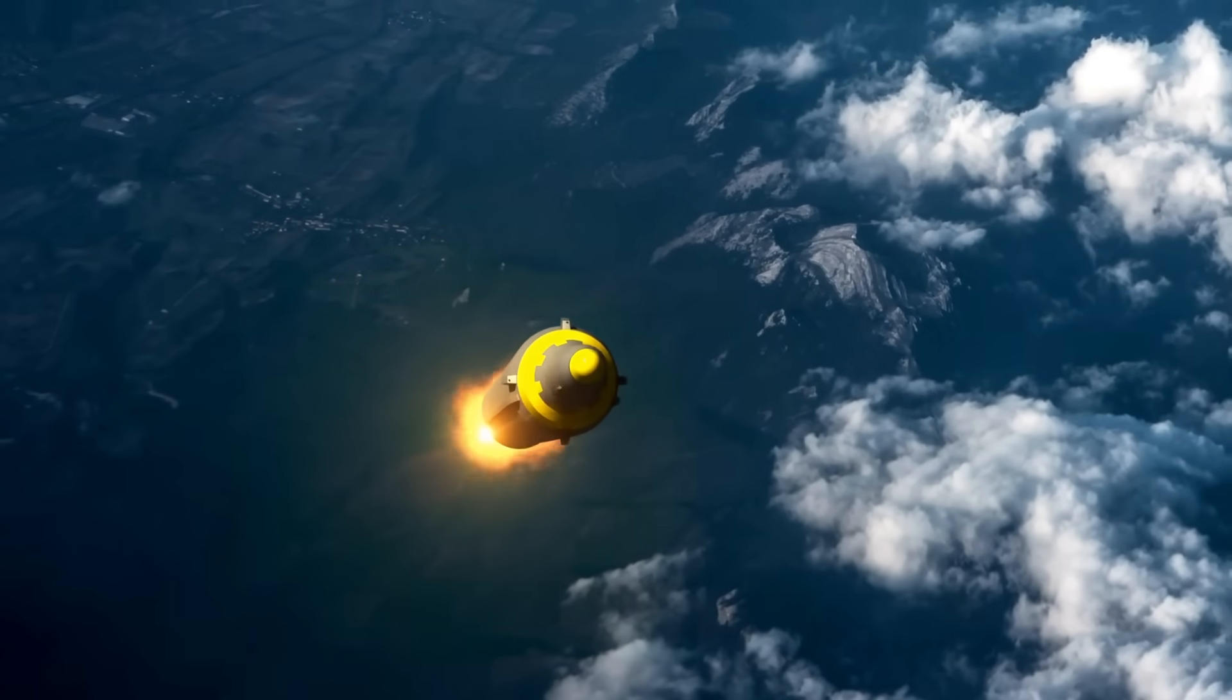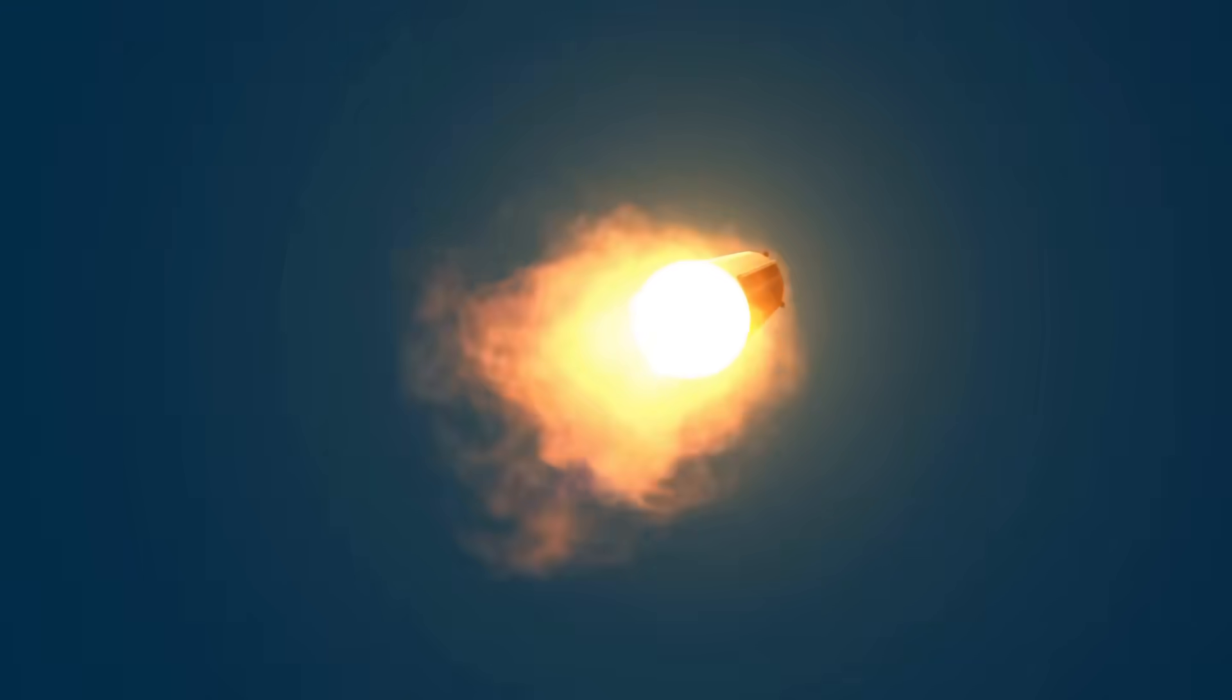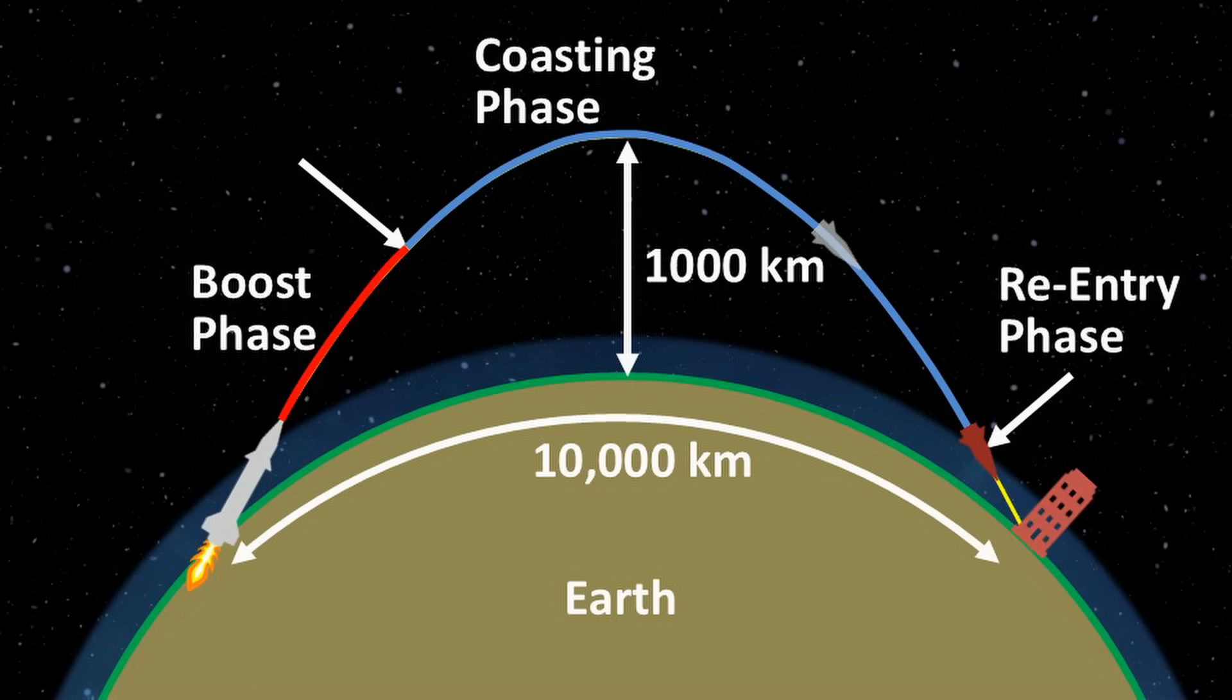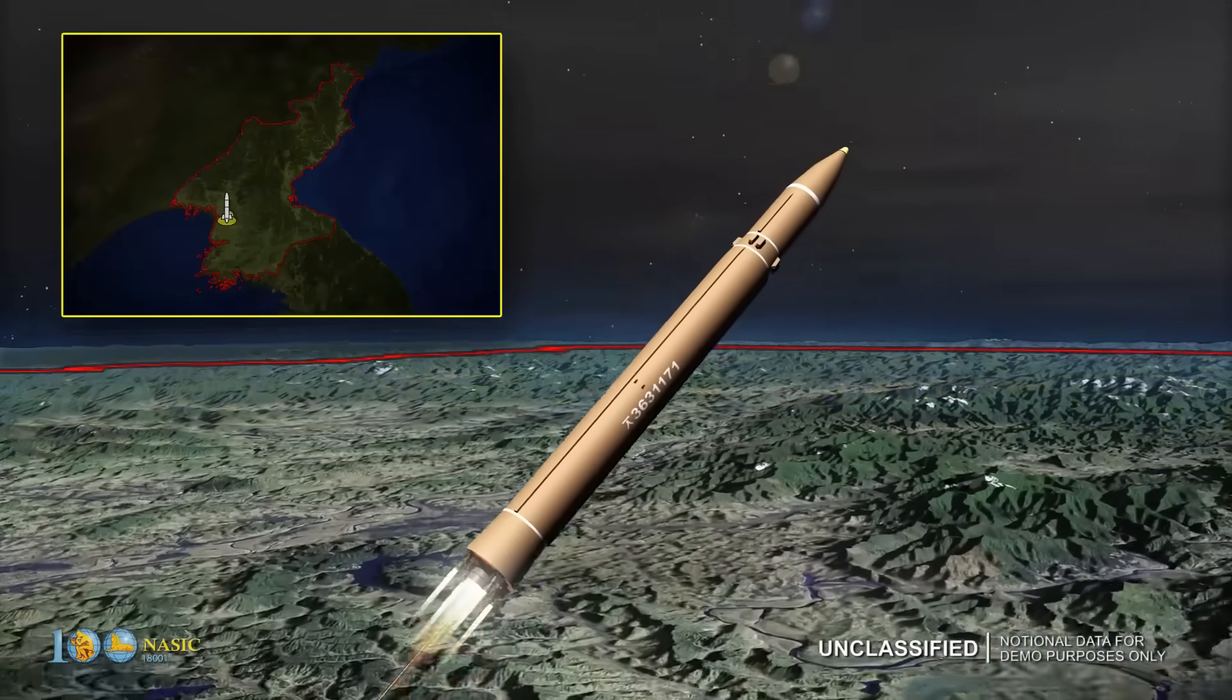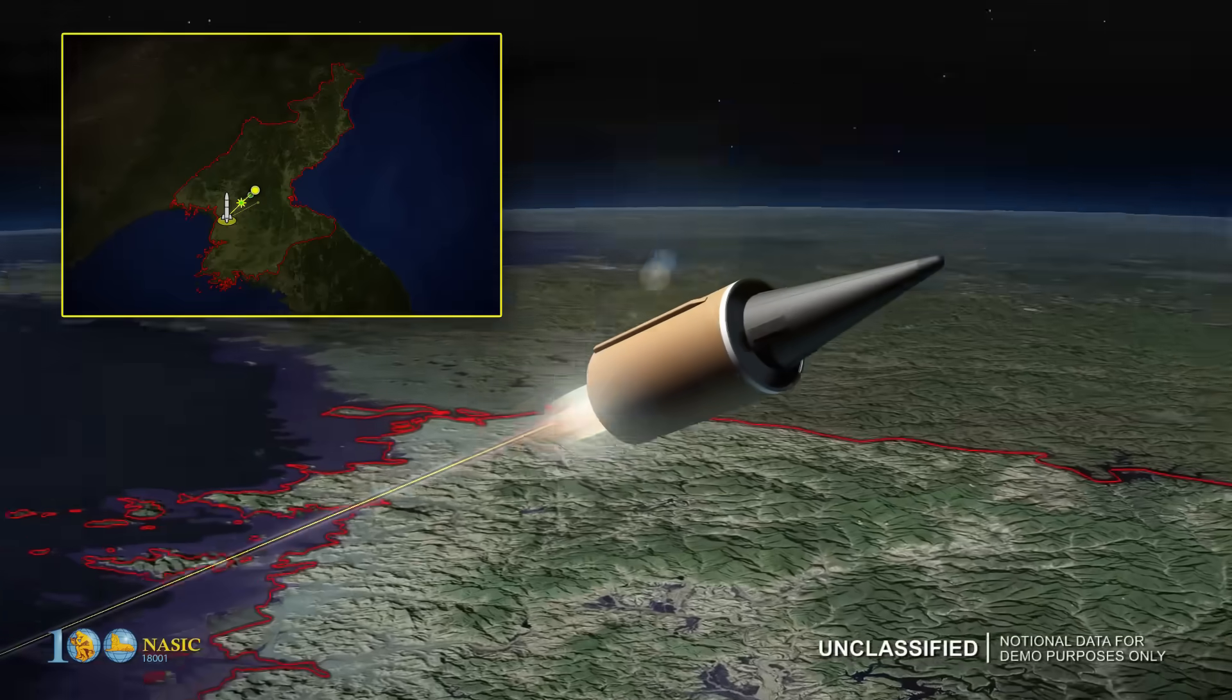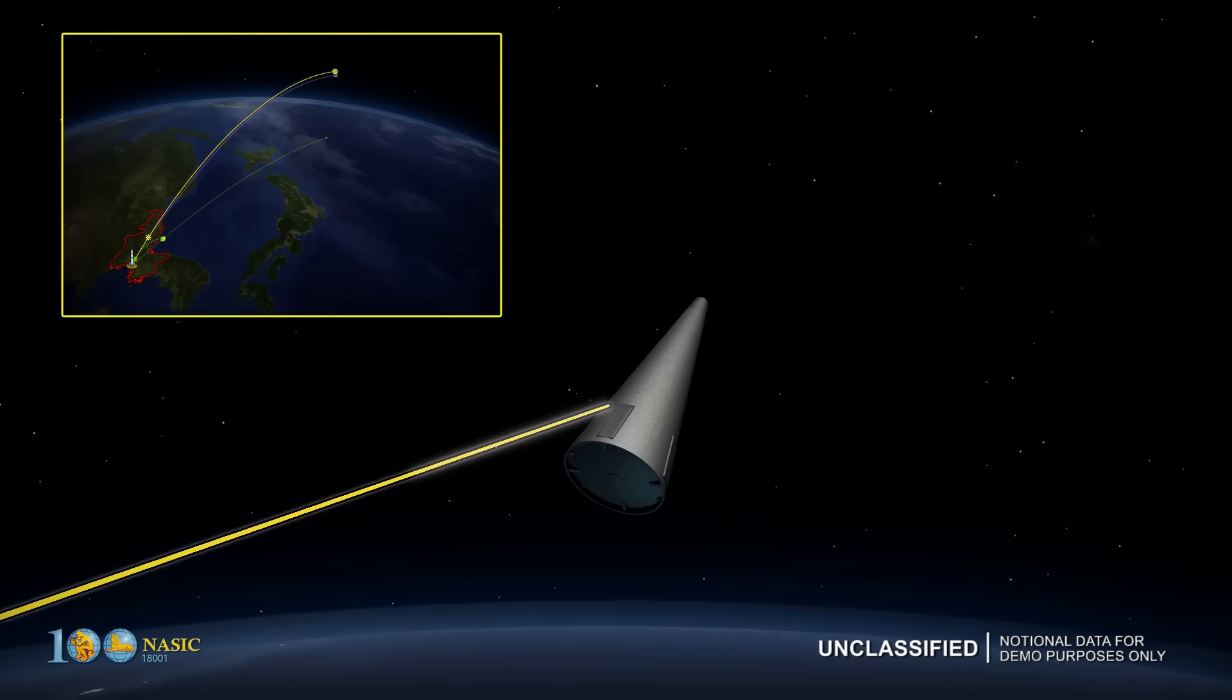Moreover, since an ICBM leaves the atmosphere, it would need to carry an oxidizer along with the fuel to make combustion possible in space. Naturally, this would increase the missile's weight even more. As a result, the missile's payload capacity, or the weight of the warhead it can carry, would need to be reduced. On the other hand, using the ballistic method allows the missile to carry heavier weapons with less fuel because we are using the effects of gravity to our advantage.